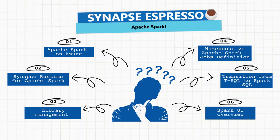In our first episode, we'll talk about using Apache Spark on Azure in different ways, and we'll also look at the Spark architecture in a nutshell. The second episode will explore the Synapse runtime for Apache Spark, so we will be talking about how to run big data workloads on Azure using Synapse.